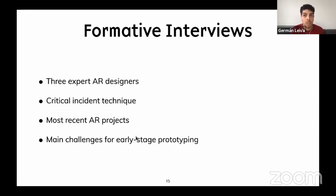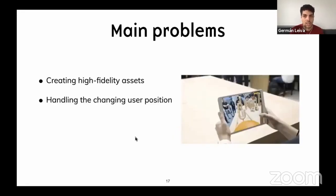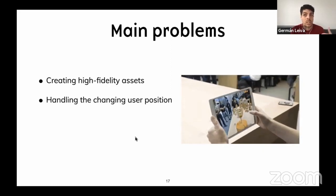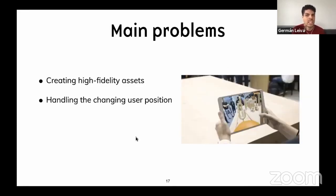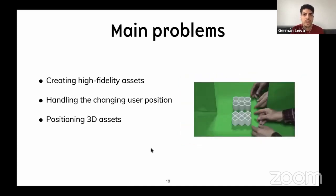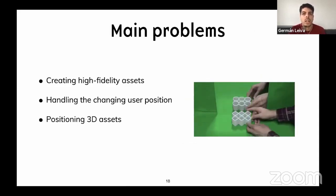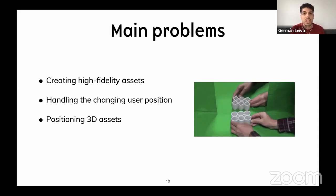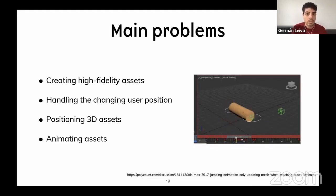To inform the design of this tool, we conducted 3 formative interviews with expert AR designers to identify current issues in early stage AR design. Four problems stood out. First, all participants mentioned a vast ecosystem of tools to create 3D assets. Other problems are consequences of the freedom the user has while using the system. One of the biggest challenges when designing for AR is the designer's inability to control the camera. Participants also said that the most tedious task is positioning 3D assets, and that positioning is problematic with depth and occlusion. Designers also considered animation a pain point, avoiding laborious manual animation like keyframing during early stage prototyping.